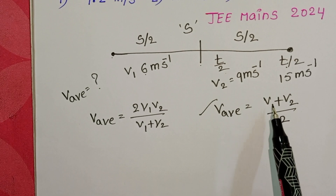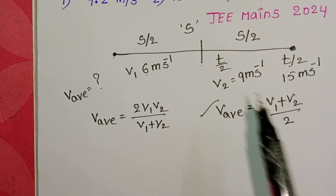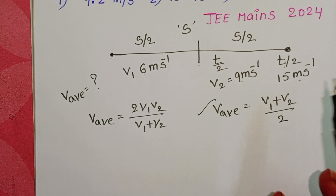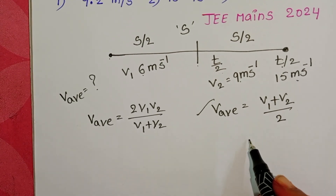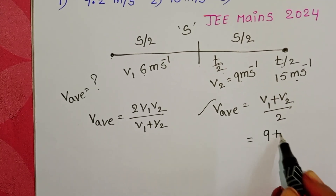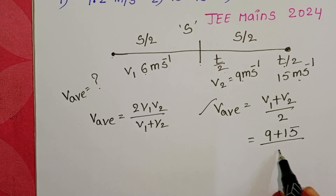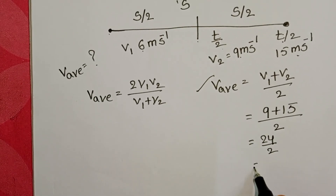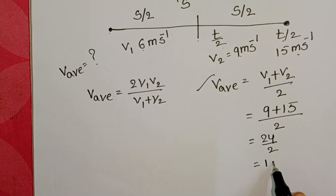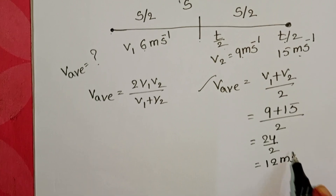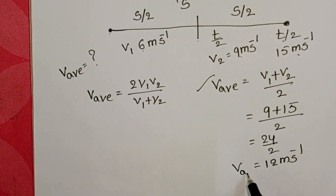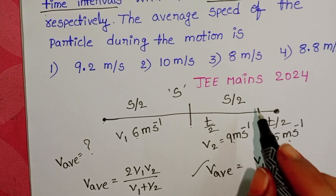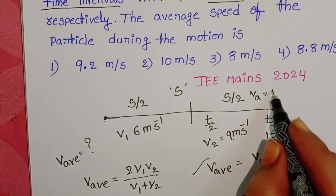V average = (V1 + V2) / 2, where the first speed is 9 and the second speed is 15. Substituting: (9 + 15) / 2 = 24 / 2 = 12 meters per second. So the average speed in the second half of the distance is 12 meters per second.